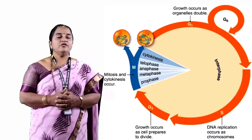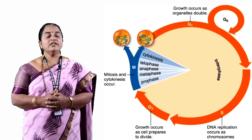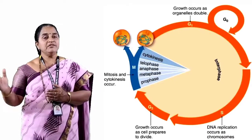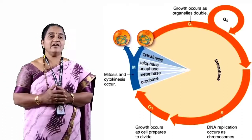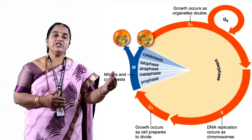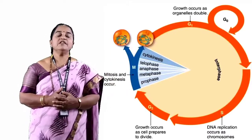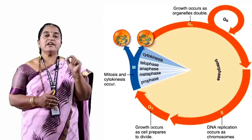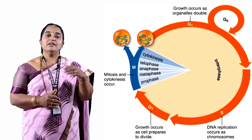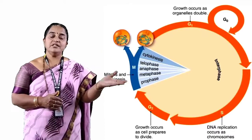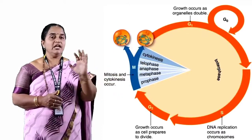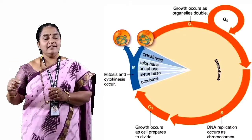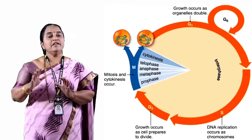There is one more phase known as the quiescent phase or G0 phase. Here, instead of undergoing G1 phase, the cell gets arrested and then slowly starts differentiating to perform various functions in the organism according to its requirement. Thus, G0 is referred to as a period of arrest, followed by differentiation, and then the cell becomes capable of performing its function.